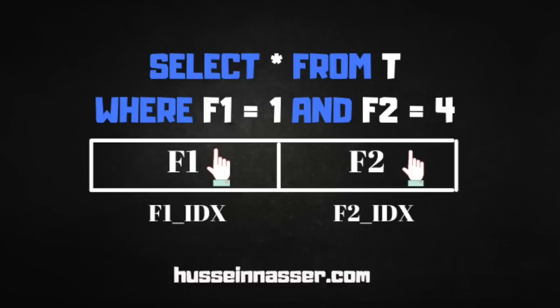Let's say we have a table with just two columns: f1 and f2. Column 1 has an index f1_idx and column 2 has an index f2_idx. We're going to do a SELECT * FROM the table WHERE f1 = 1 AND f2 = 4. Let's go through some scenarios to see how the database optimizer decides: should I use the f1 index or the f2 index? There are many ways to look for these values.